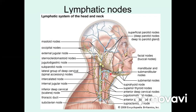The submandibular lymphatic nodes — from six to eight — are located in the subcutaneous tissue at the level of the submandibular triangle. They receive lymph from the upper lip, lower lip, cheek, tongue, palate, palatine tonsils, and the sublingual and submandibular salivary glands.